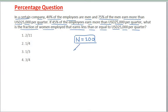Now, 40% of the employees are men, so men equals 40. Now, what is given to us: 75% of the men earn more than USD 25,000 per quarter. So 30 men earn more than USD 25,000 per quarter.